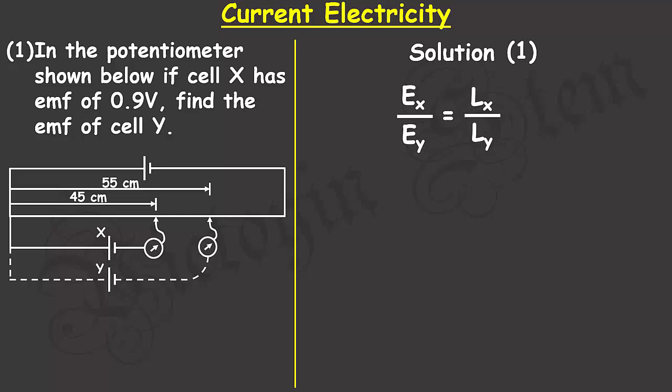In the problem, I was given the electromotive force of cell X to be 0.9 divided by E subscript Y. I wasn't given the electromotive force of cell Y. It equals the length from one end of cell X, which is 45 centimeters, divided by the length from one end of cell Y, which is 55 centimeters, as you can see in the schematics of the potentiometer.